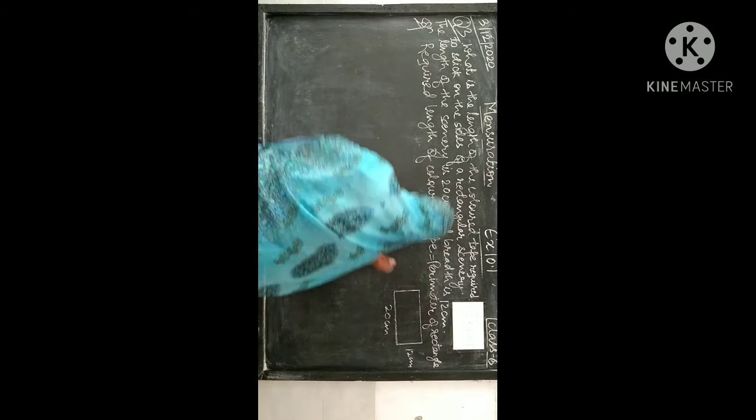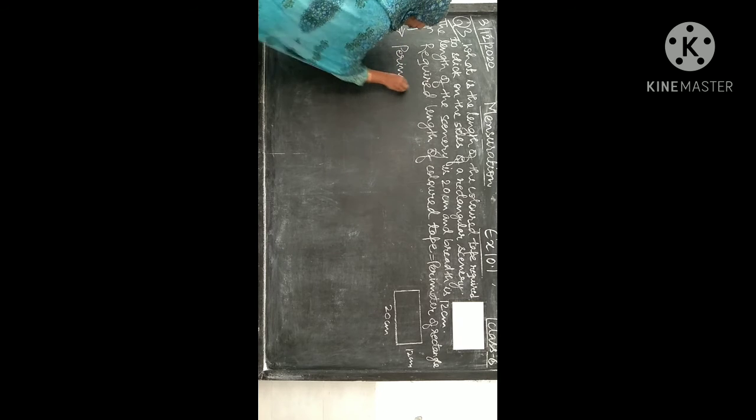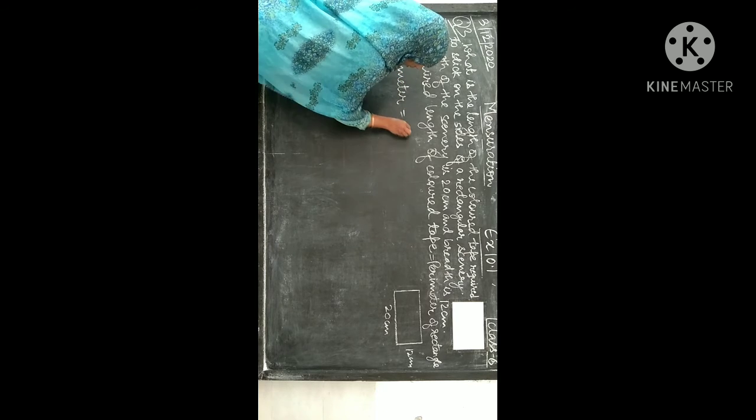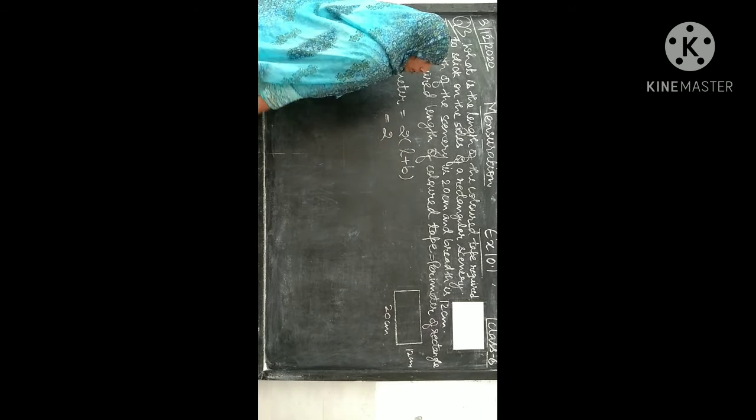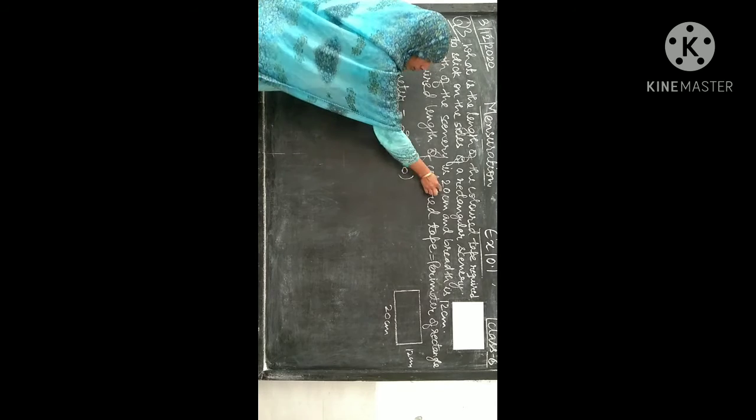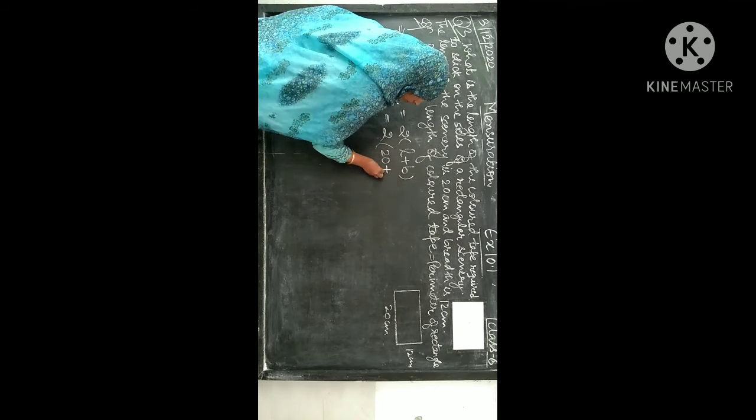And ye iska equal hai. To aap ko formula likhna padega perimeter ka. Perimeter kaise nikalenge? So nikalenge 2 into (l plus b). Length kitni di hai aap ko? 20 cm. And breadth kitna diya hai? 12 cm.